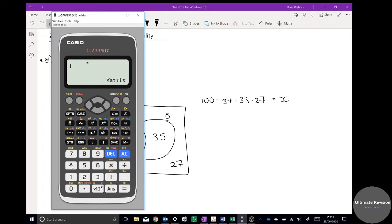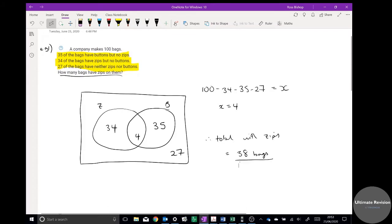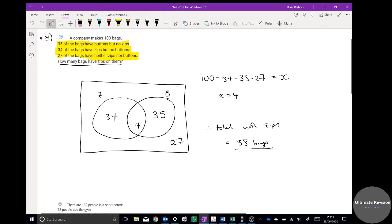If I do that, I know four bags are going to go in the middle there. So x is going to equal 4, so 4 goes in the middle there. We can sort of get rid of x now. And therefore, the total with zips is equal to 34 plus 4, which is 38 bags. So when you're doing these questions, please do draw out the Venn diagram. That should help you with the first task.